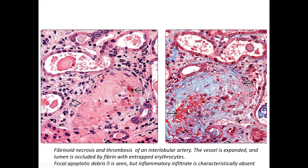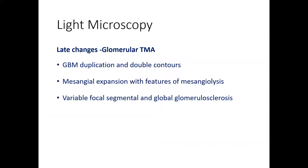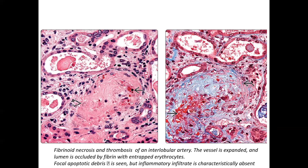In the interlobular artery, fibrin is present in the lumen and wall with entrapped erythrocytes. The characteristic observation here is that although fibrin is present in the lumen and wall, there is no inflammation in the wall. If you find inflammation in the arterial wall, you should exclude vasculitis before considering thrombotic microangiopathy. These are the early-to-subacute changes of TMA.